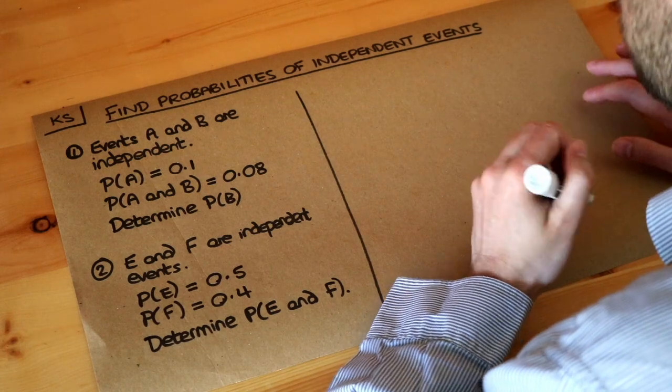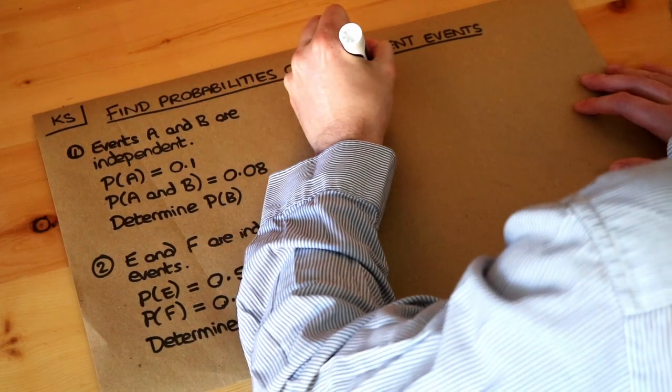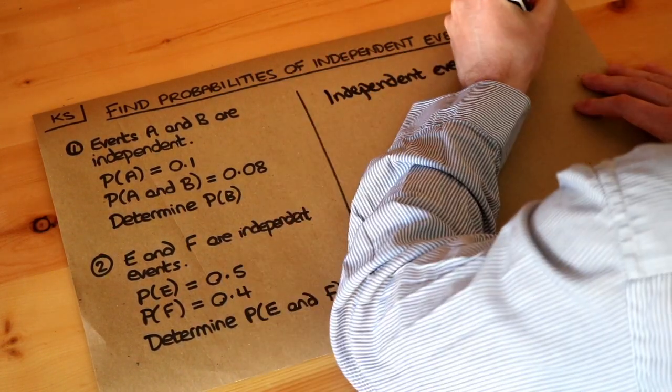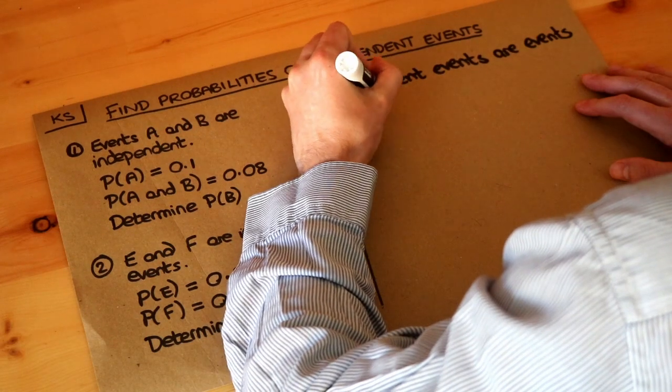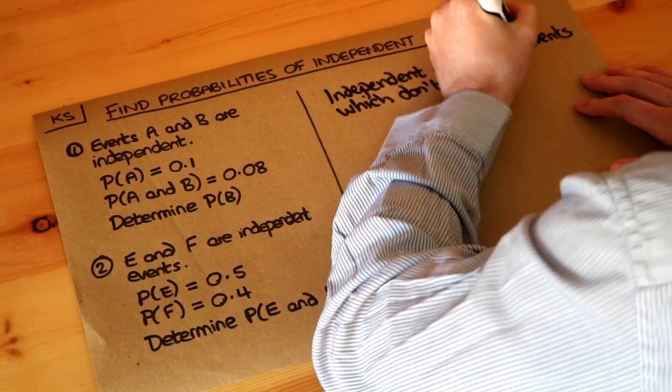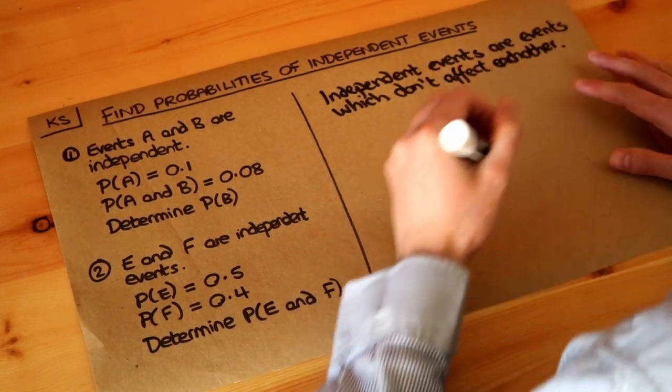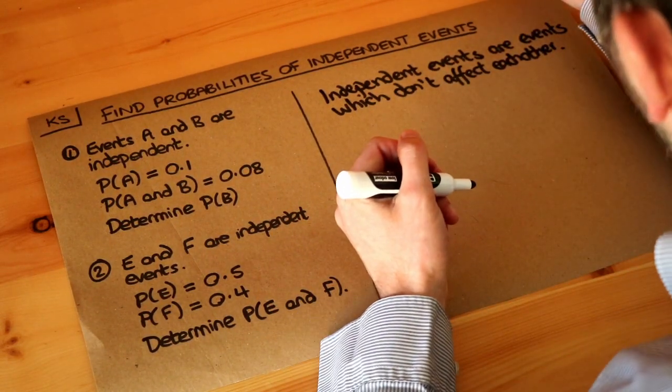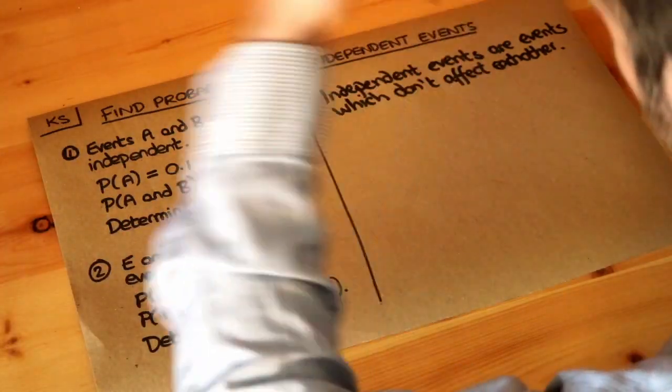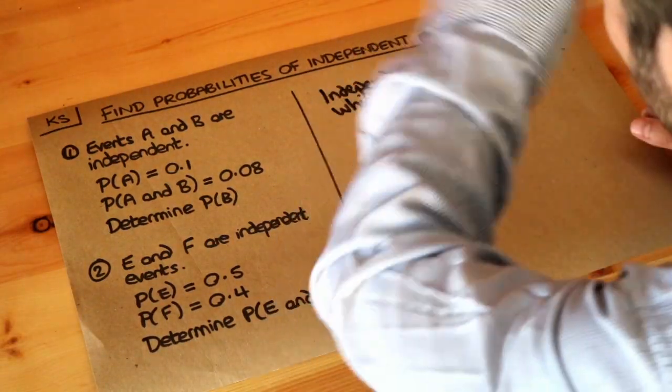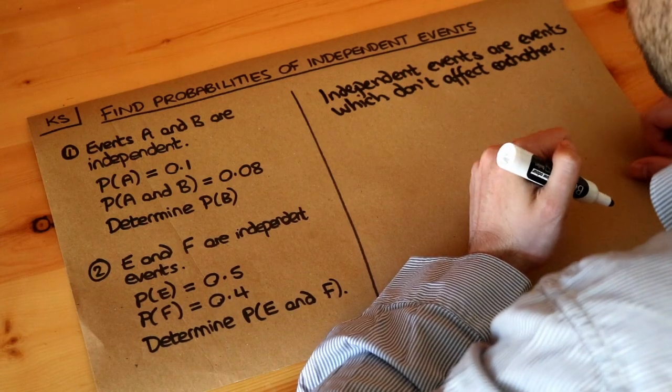So independent events are events which don't affect each other. So the example: tossing a coin and throwing a dice. The outcome of your coin doesn't influence the dice. So two independent things, they're separate things. What happens on one doesn't influence the probability of the other.